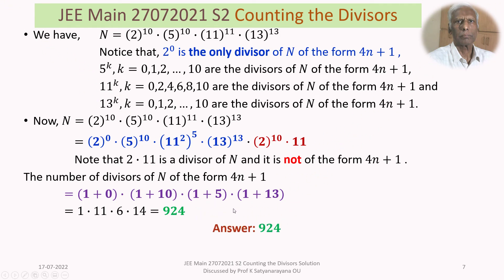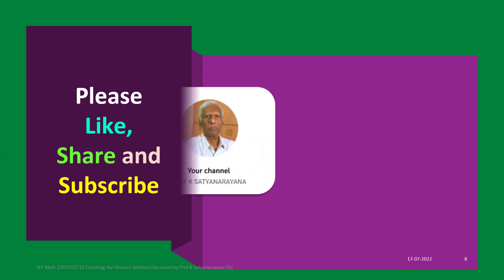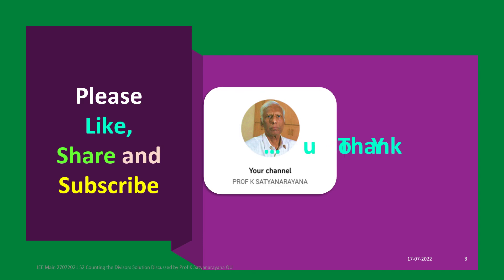Thus, the number of divisors of the given number which are of the form 4N+1 is 924. That concludes the discussion of the solution of this problem on counting the number of divisors of a given number which are of the form 4N+1. I hope you have understood the solution. I wish you all the best. Thank you.